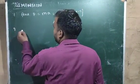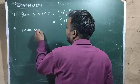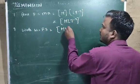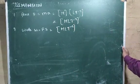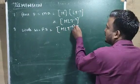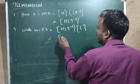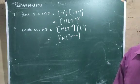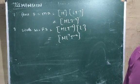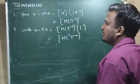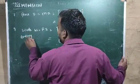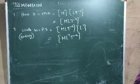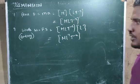Now let us see the dimensional formula for work. Work equals force into displacement. The dimensional formula for force is M L T⁻² and for displacement is L, so the result will be M L² T⁻². This is the dimensional formula for work done. Work done is also equal to energy, so the dimensional formula for energy and work done will remain the same.